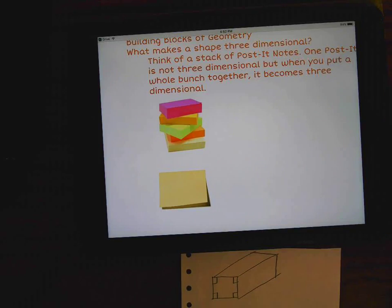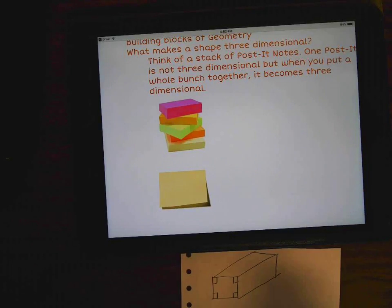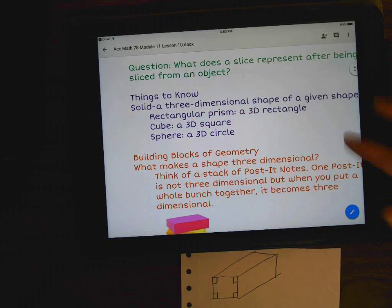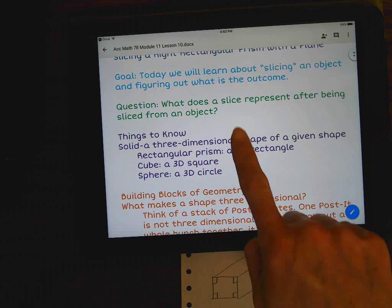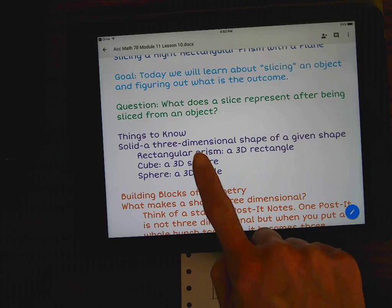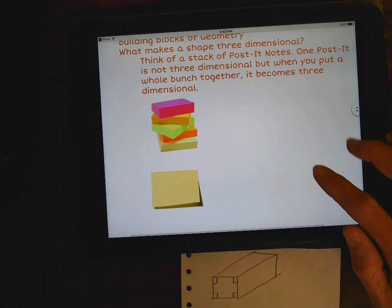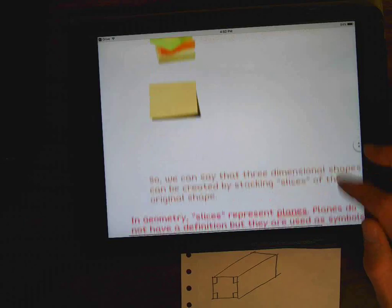So you've got to think of the post-it as a slice. So if we were to take this post-it stack and start pulling the slices off, pretty soon we would be down to a 2D shape of just the rectangle. So that's what we're talking about when we say slices. So what does a slice represent after being sliced from an object? The slice represents the 2D shape. And hopefully this little post-it example will help you understand it.